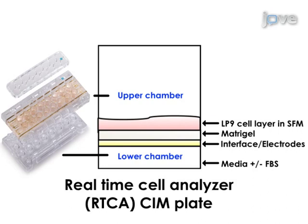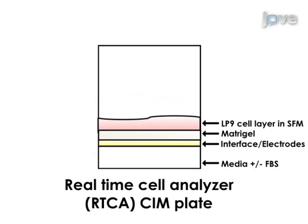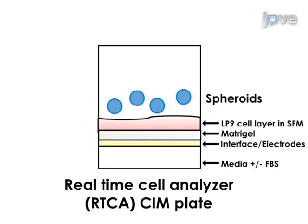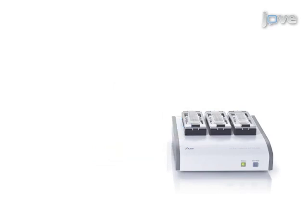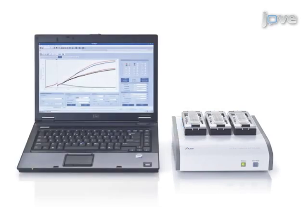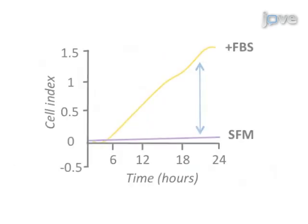The matrigel mimics the peritoneal cavity and the mesothelial lining itself. Next, the ovarian cancer spheroids are harvested and added to the upper chambers of the real-time analyzer plate wells. The final step is to program and initiate the real-time cell analyzer, which will take periodic readings at predefined intervals over a prolonged assay period, ultimately depicting the continuous invasion process used to determine key factors regulating ovarian cancer cells as they invade cellular and matrix barriers.